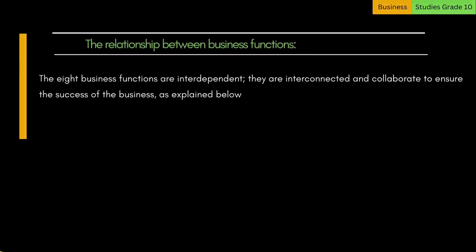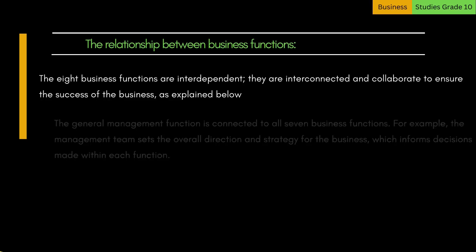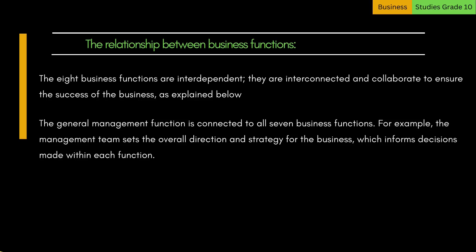The relationship between business functions: the eight business functions are interdependent — they are interconnected and collaborate to ensure the success of the business. The general management function is connected to all seven business functions. For example, the management team sets the overall direction and strategy for the business, which informs decisions made within each function.